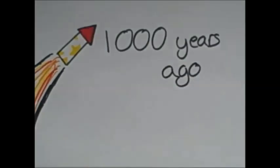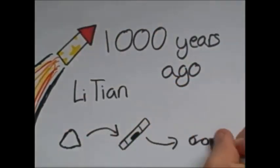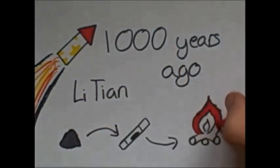The very first firework was made over a thousand years ago in China, when a monk named Li Tian stuffed a bamboo stick with gunpowder and threw it on a fire, creating a loud bang.